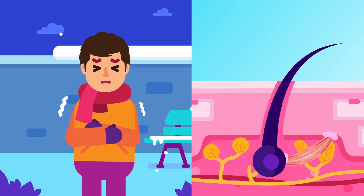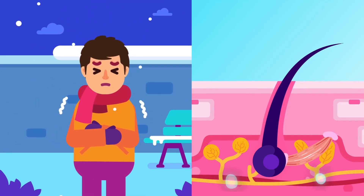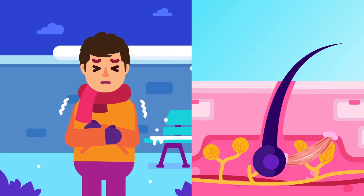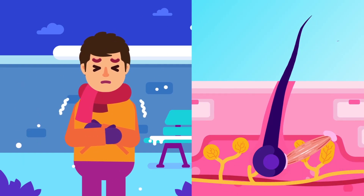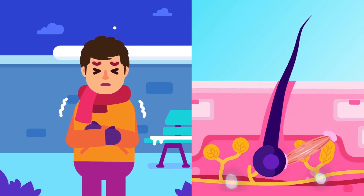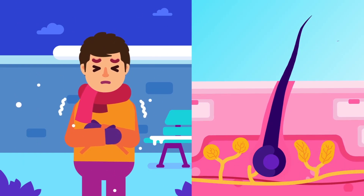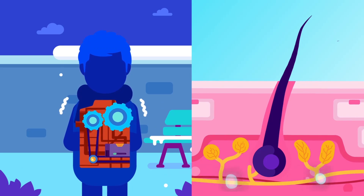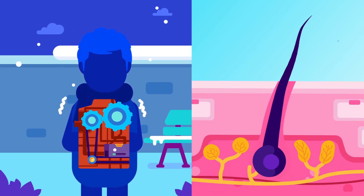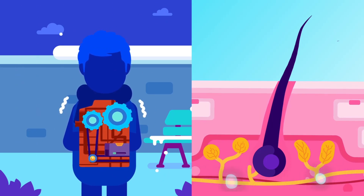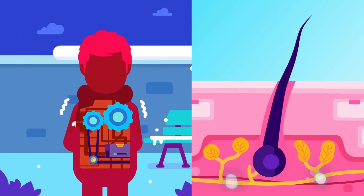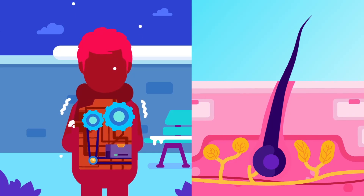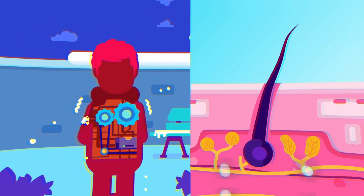Due to this reaction, shivering occurs. Hair erector muscles contract, raising the hair. Blood capillaries constrict and metabolic reaction increases. As a result, this negative feedback causes the overall body temperature to increase.